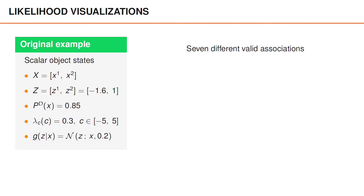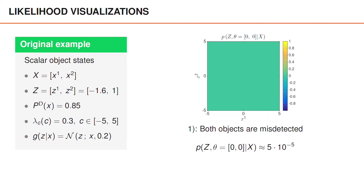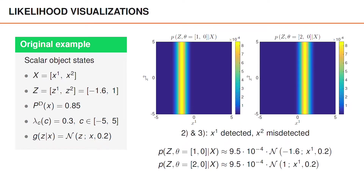Later in the course, we will derive an expression for the number of valid associations given the number of objects and measurements. There is one association in which neither object is detected — both are misdetected — and in this case the measurement likelihood evaluated for different values of x1 and x2 is constant, about 5 times 10 to the power of minus 5. There are two associations in which x1 is detected and x2 is misdetected, corresponding to associating x1 either to measurement z1 or to measurement z2.